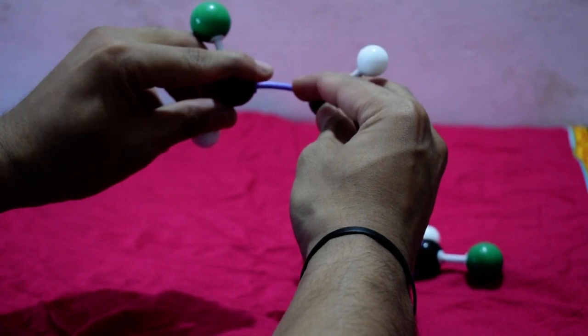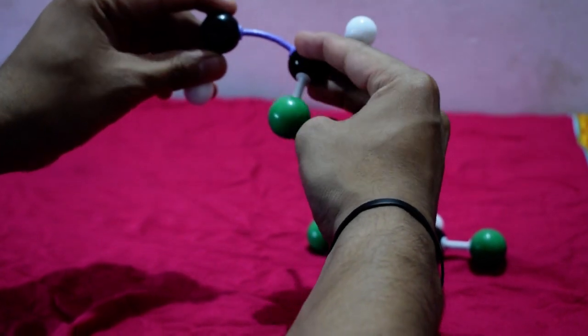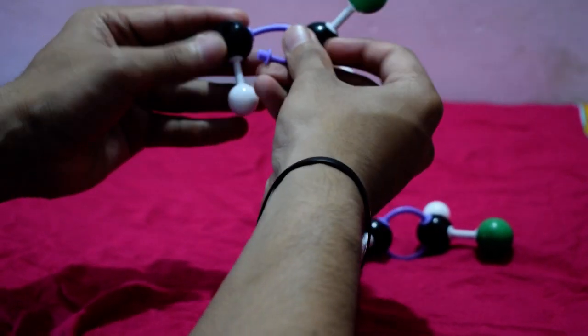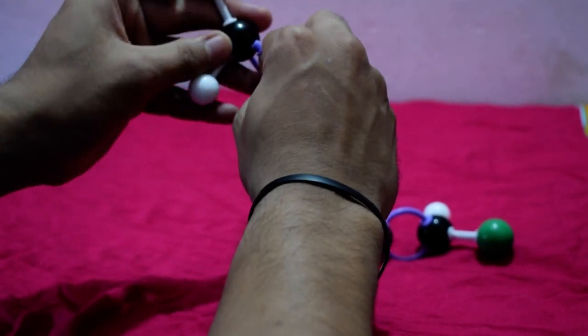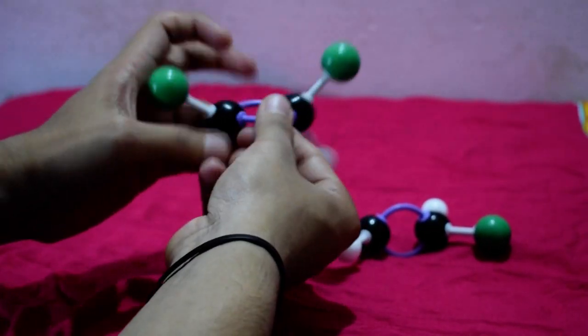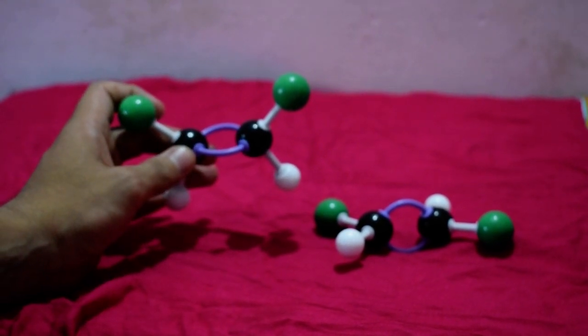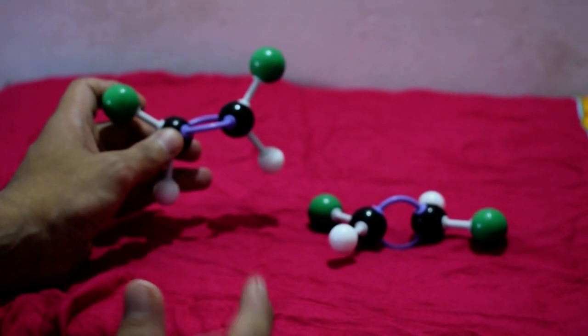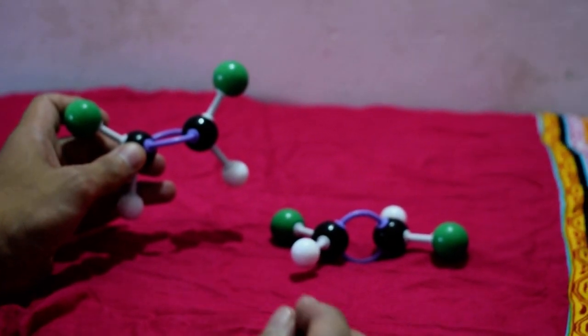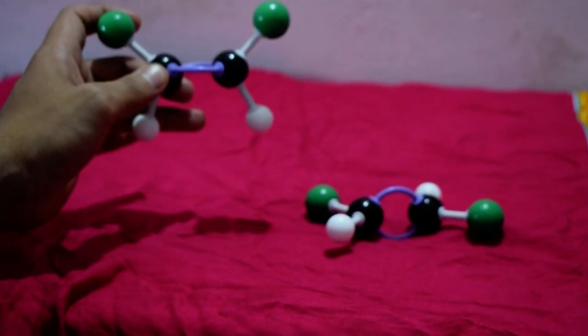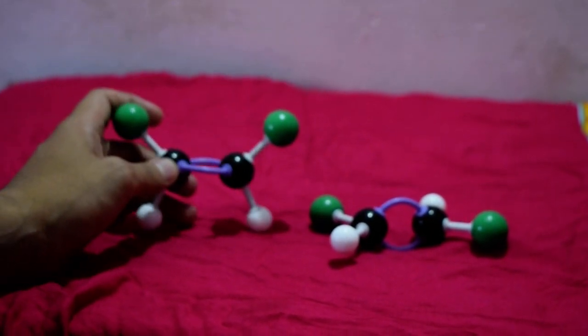But the alkene is lost. Only single bond is there. So, this can't be rotated. So, it is known as configurational. That is, the molecule cannot be rotated. If the molecule can be rotated, then it comes under conformational isomerism. But here, it comes under configurational isomerism.